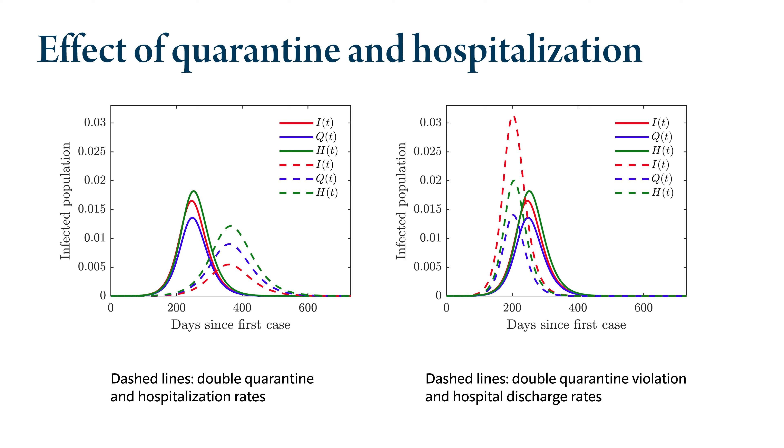The pane on the right shows what happens if quarantine violation rates and hospital discharge rates are doubled. This results in a higher pandemic peak, which we definitely want to avoid.